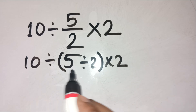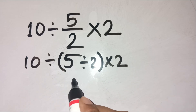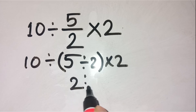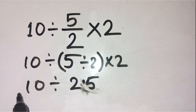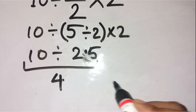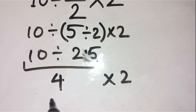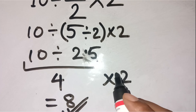So the full expression is actually 10 divided by (5 divided by 2) times 2. Now let's solve that. Inside the bracket, 5 divided by 2 equals 2.5. Then 10 divided by 2.5 gives 4. And finally, 4 times 2 equals 8. So the correct answer is 8, not 2.